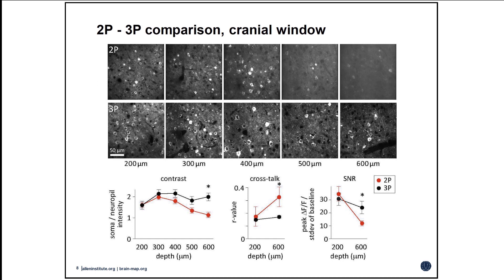For our electron microscopy experiments, we decided to image the surface layers with two-photon microscopy and then switch over to three-photon microscopy for the deeper locations. One question was: at what depth do we need to enact that switch? Our approach was to set up our microscope to do simultaneous two- and three-photon microscopy — gathering a line of two-photon data, then as the galvanometer returns, switching off the two-photon laser, turning on the three-photon laser, and gathering three-photon data in the opposite direction.